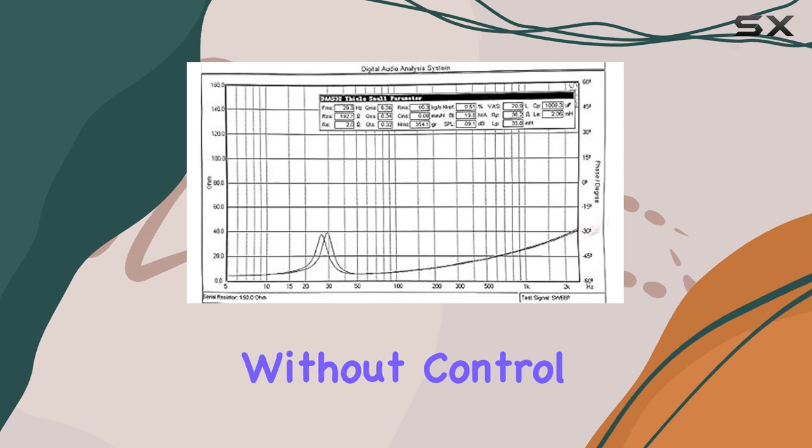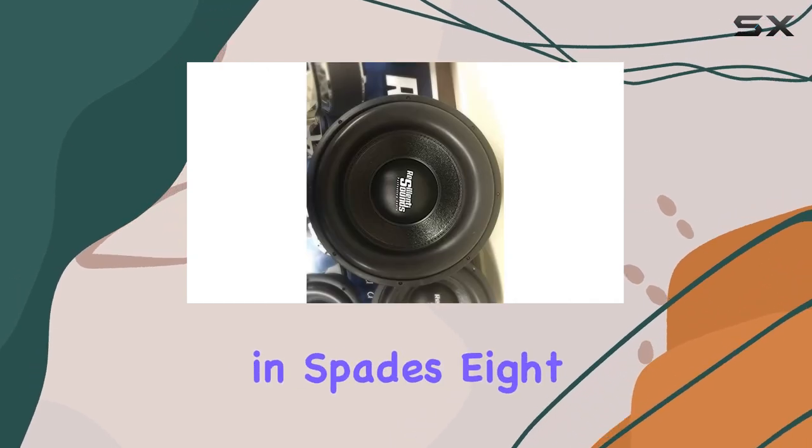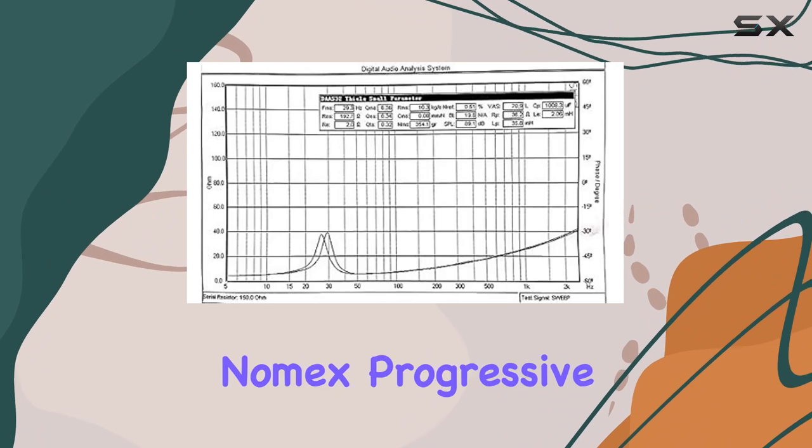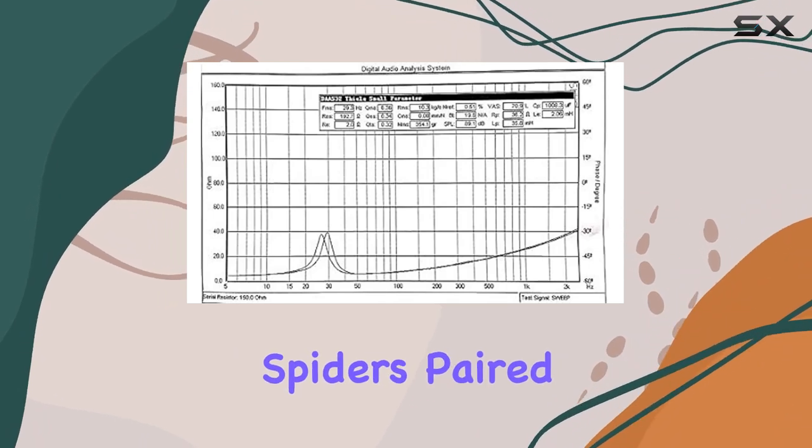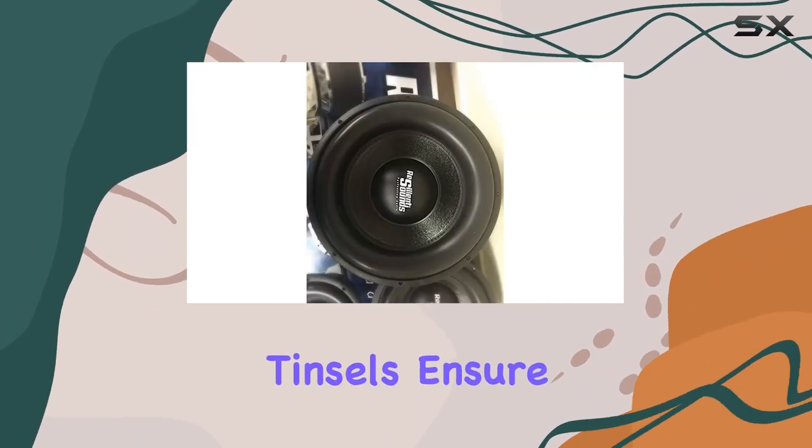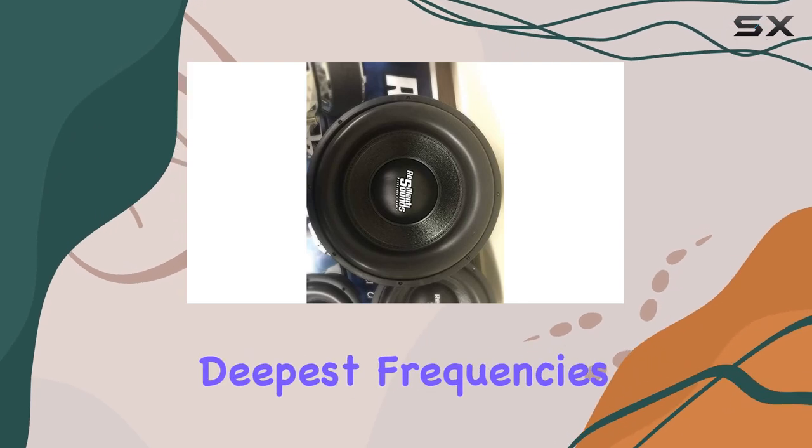But power is nothing without control, and the Team 15 delivers in spades. 8-stack 10-inch Nomex Progressive Spiders, paired with XL triple tinsels, ensure precise control over every note, even at the deepest frequencies.